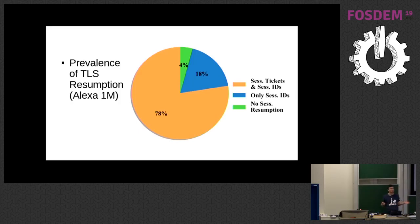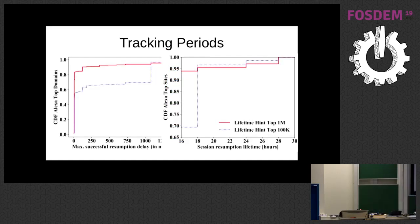What does it even mean to track? How big of an issue is this? We've measured for how long services advertise that they can track you — my negative interpretation. Their interpretation is: for how long this key is valid. We've also measured how long clients actually reuse this token. Turns out the self-advertised tracking time is roughly 24 hours, with a few exceptions — I think Google and Facebook had longer tracking periods.